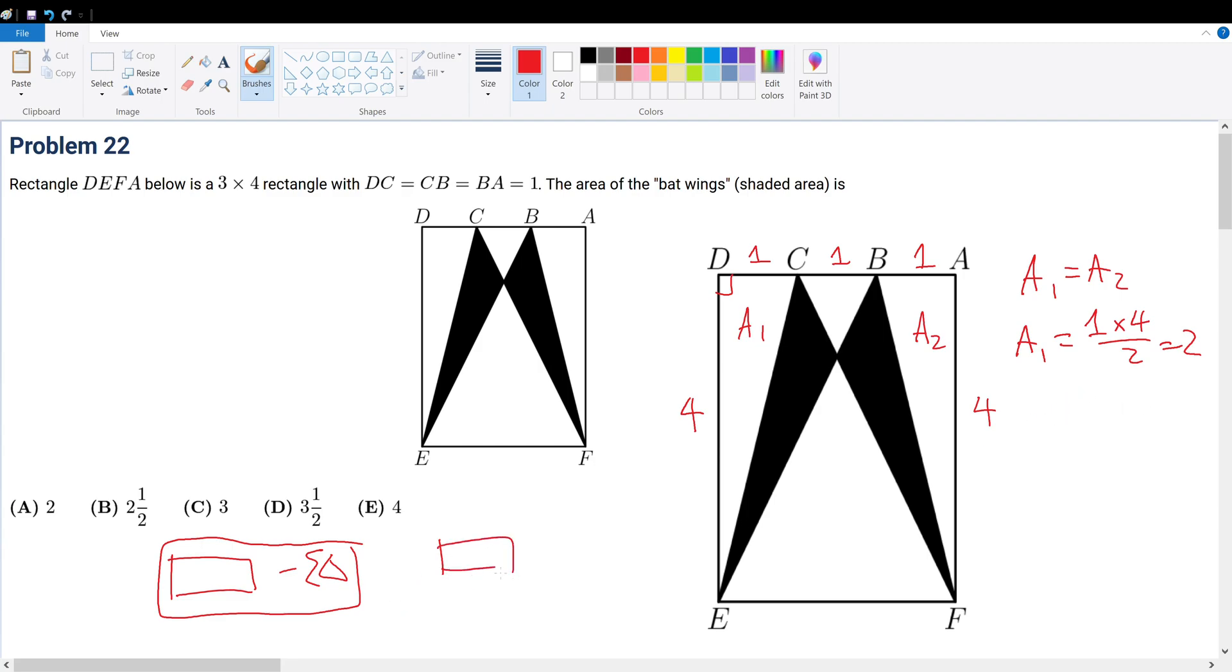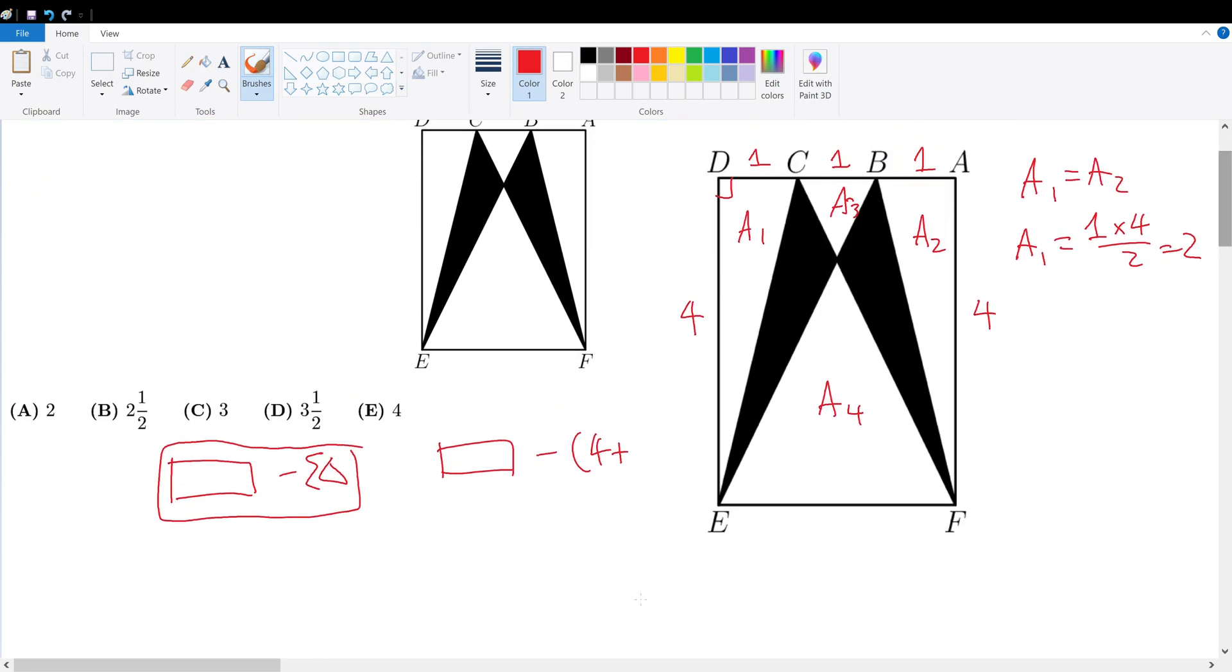So right now we have the rectangle area minus 4 plus this area, A3, and this area, A4. Now A3 and A4 are the tricky parts, but it's not too tricky, right? Because we can establish ratios.